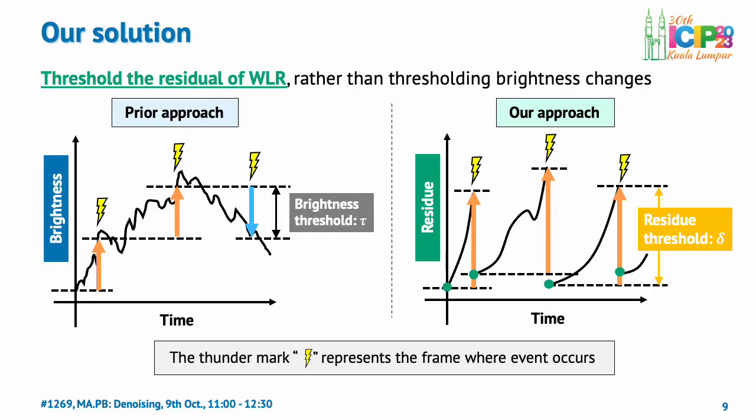The technical highlights of our method are two-fold. First, instead of focusing on the changes in brightness, we threshold the increase in residuals from the weighted linear regression. Second, the threshold for these residuals is given as the square of the threshold for brightness changes. For overall technical details, please refer to our paper; however, I will introduce a brief explanation of each point.